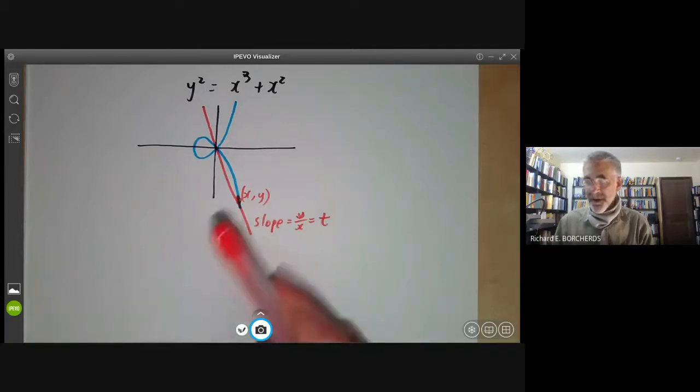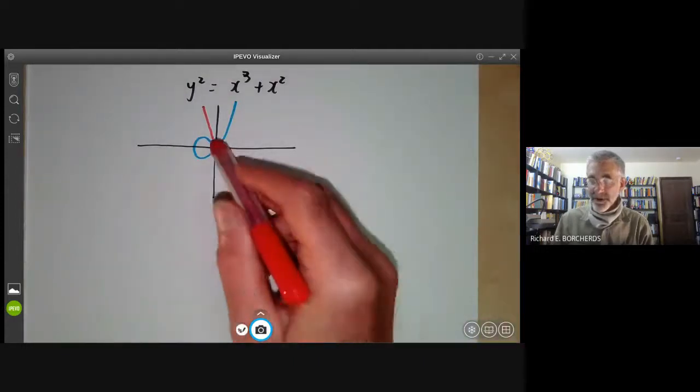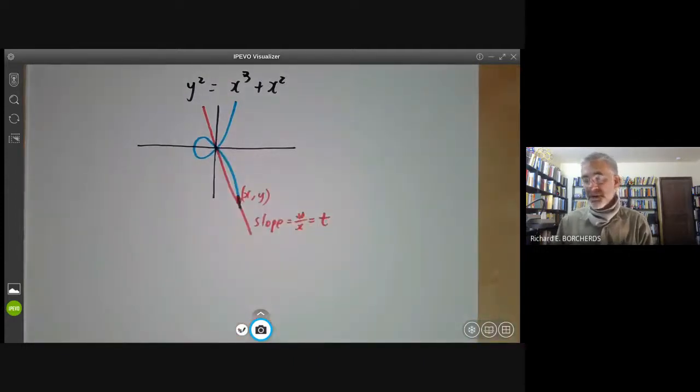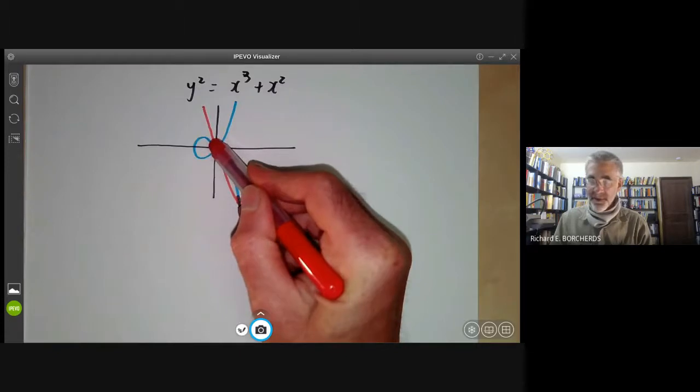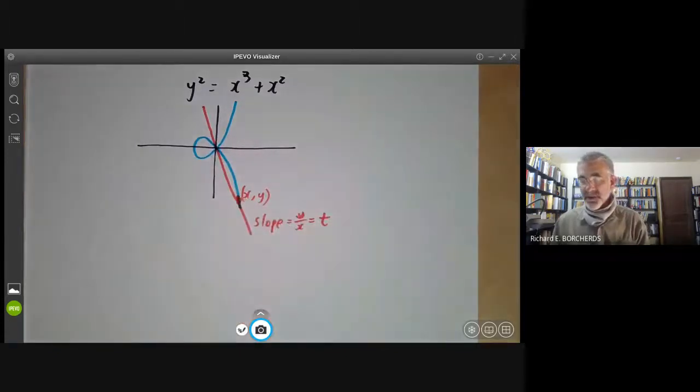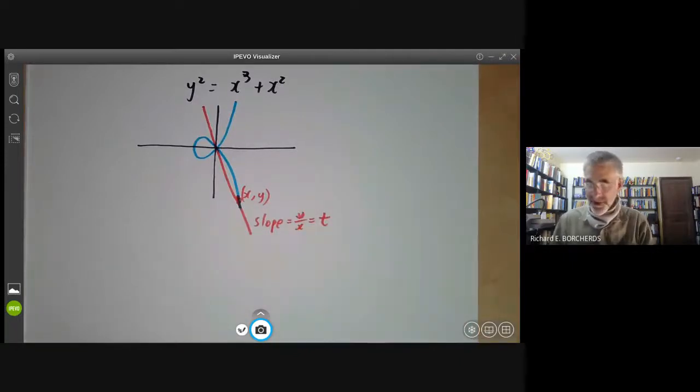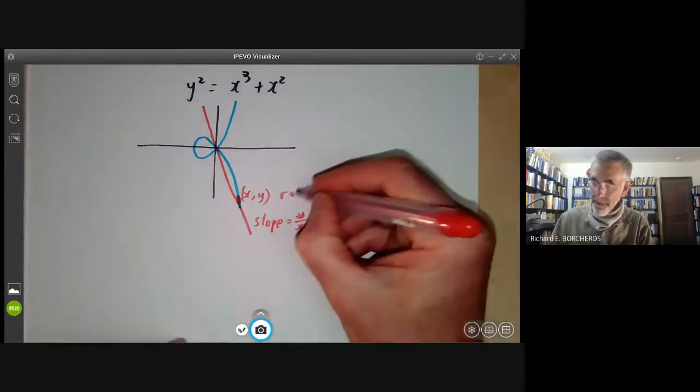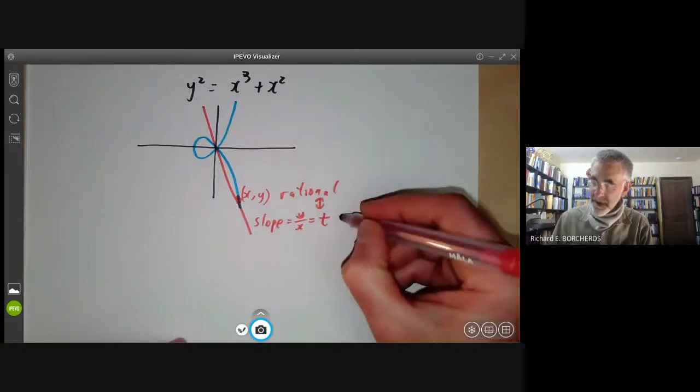On the other hand, if we choose a line through the origin with rational slope, it's going to meet this cubic in three points, which will be given by the roots of some equation with rational coordinates. And two of the roots are already rational because they're both just zero. So the third intersection point must also be rational. So in other words, x and y rational correspond to t being rational.